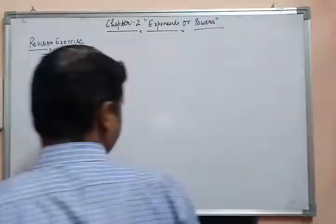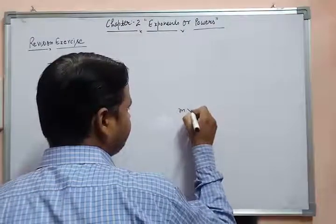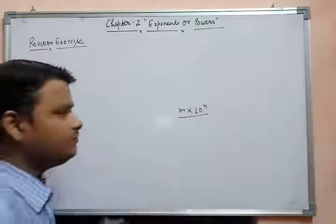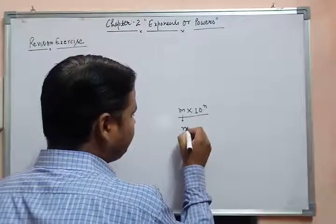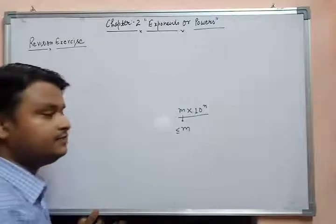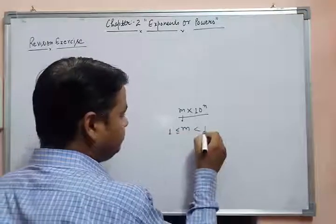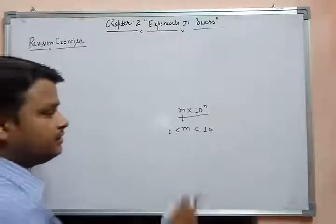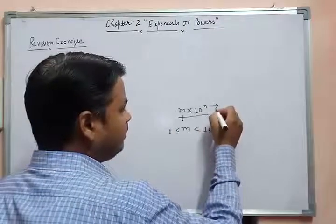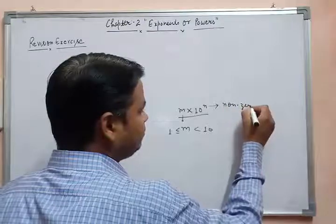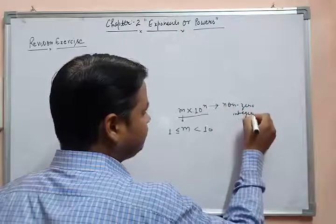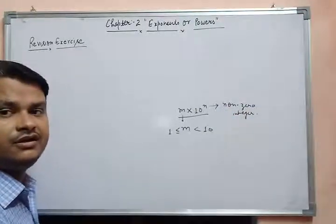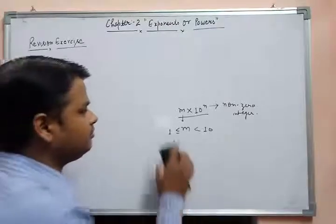You all know about a number which can be represented in standard form, where M is called the mantissa and the value of M lies between 1 and 10 — that is, M is greater than or equal to 1 but less than 10 — and N is a non-zero integer. Non-zero integer means any positive or negative number except zero.